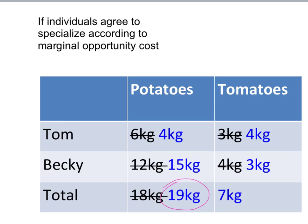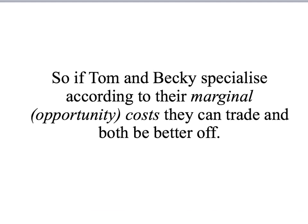Maybe they split it 50-50, or maybe Tom gets a bit more for coming up with the idea. However they divide it, they will both be better off by specialising according to marginal opportunity cost and then trading. If Tom produces more of the good where he has the lower marginal opportunity cost, and Becky produces more of the good where she has the lower marginal opportunity cost, they can organise production to end up with more output, trade, and both be better off. And they don't really need a dictator to tell them to do this — they will do it out of their own self-interest, because they're both winners from specialisation and trade.